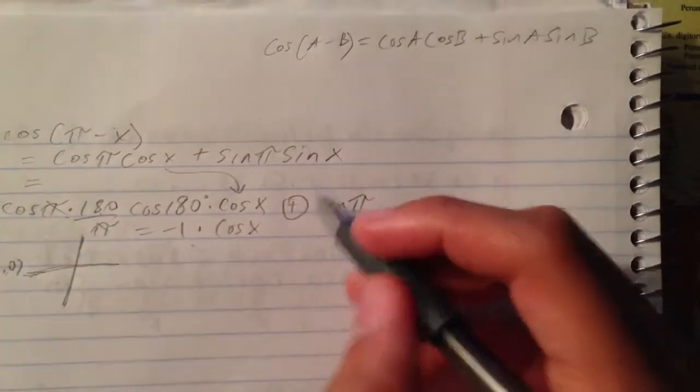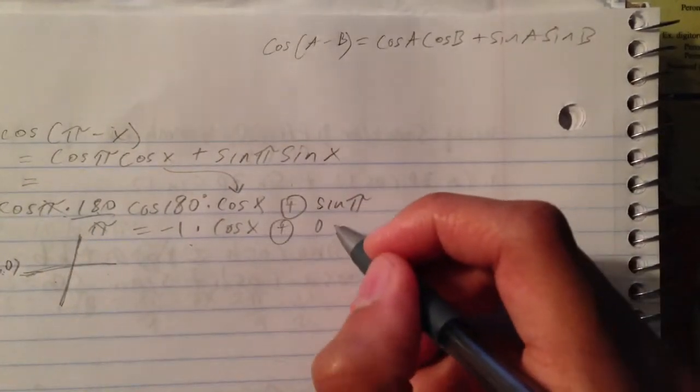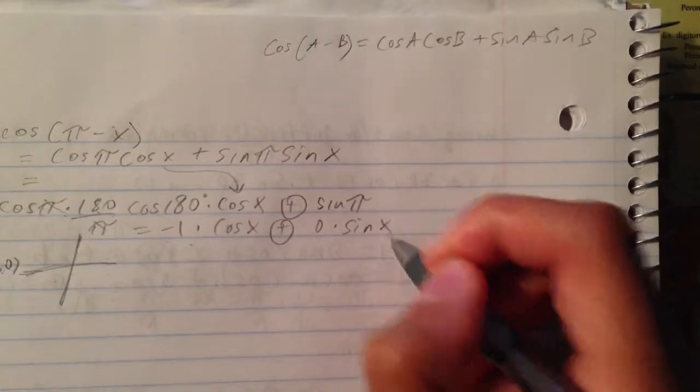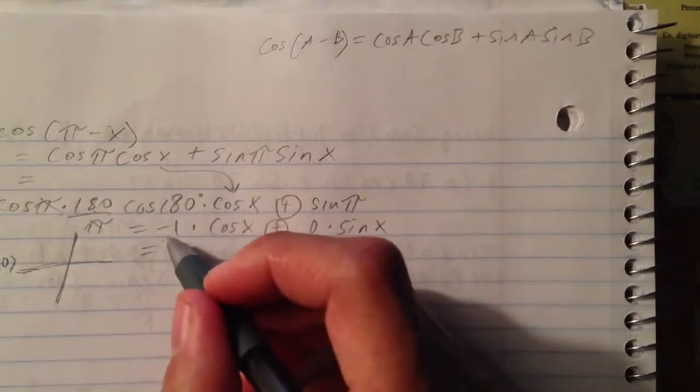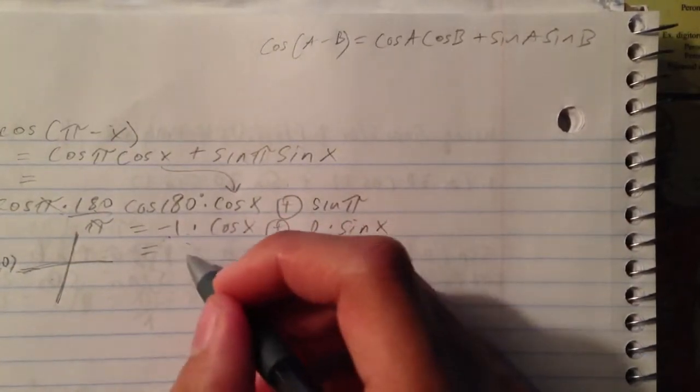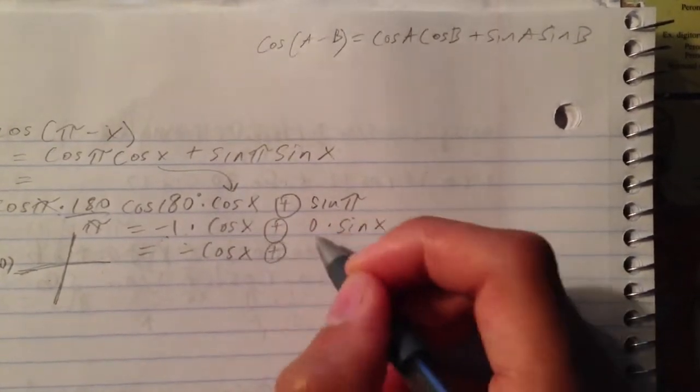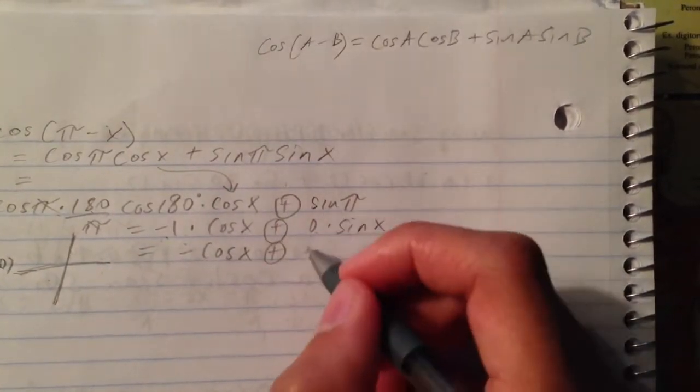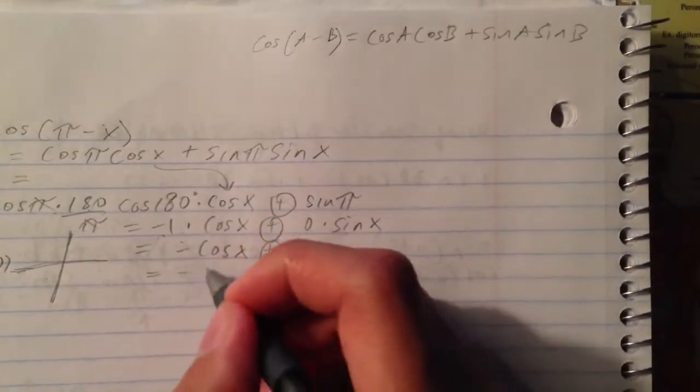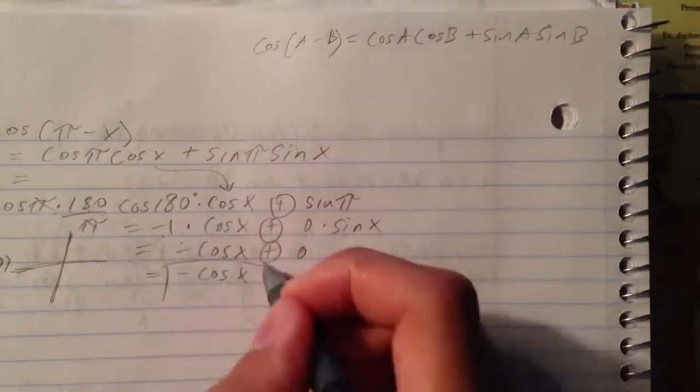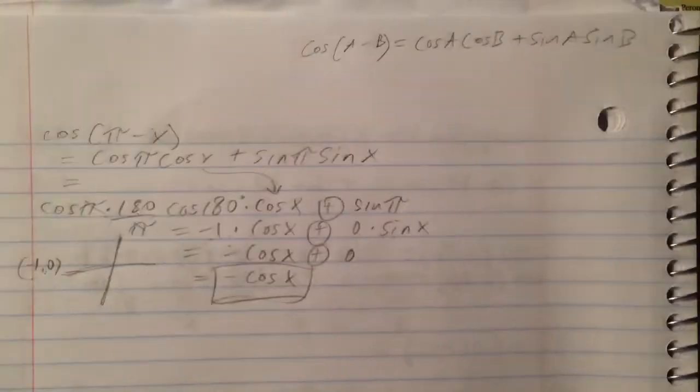So plus 0 times sine x. Now we know that negative 1 times cosine x plus 0 times anything is 0. So our final answer is negative cosine x.